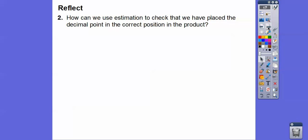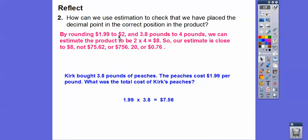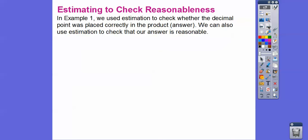So how can we use estimation to check that the decimal point is in the correct position? We did $1.99 times 3.8 to get $7.56. We can round $1.99 to $2 and round 3.8 to 4, then multiply 2 times 4 to get 8. So we know our answer should be close to 8, and $7.56 is close to 8. This confirms the decimal is placed correctly.